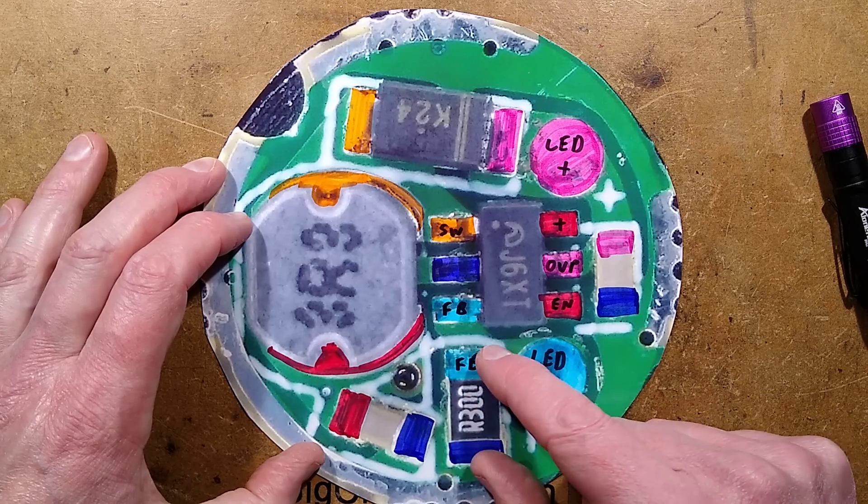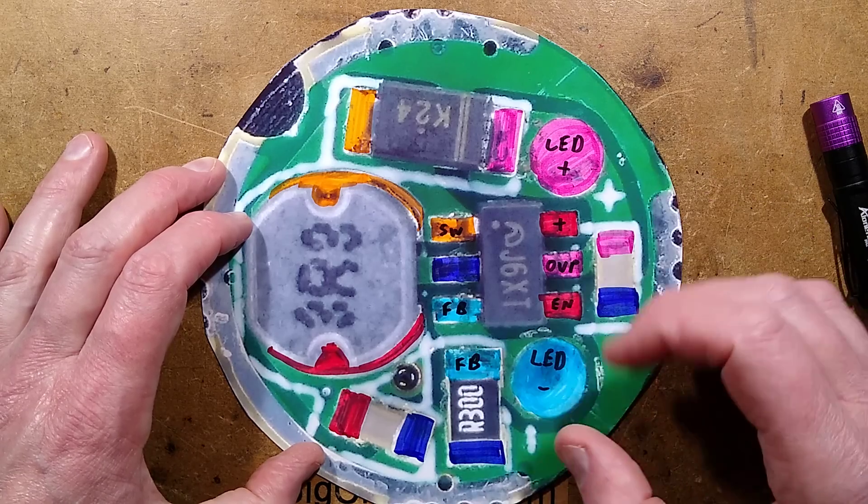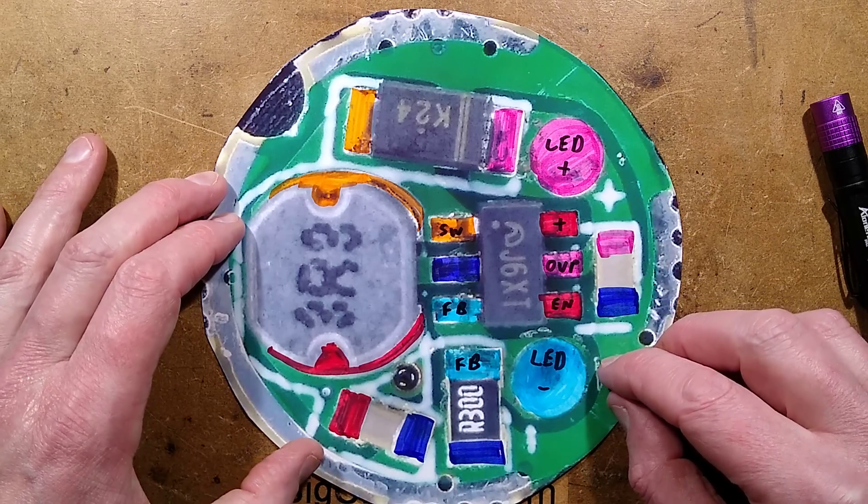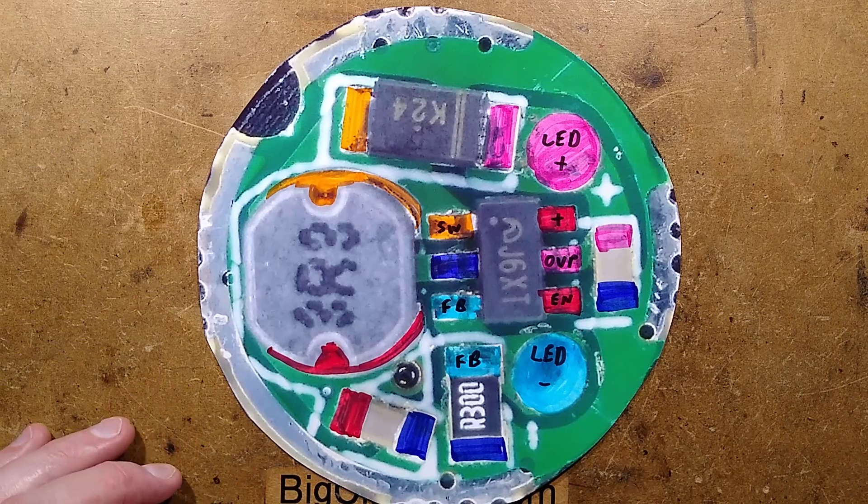But the current flows through the LED and through the feedback resistor. When it detects about 0.2 volts across the feedback resistor, that's when it cuts back and it just holds it back with a fixed current through the LED. Let me show you the schematic.